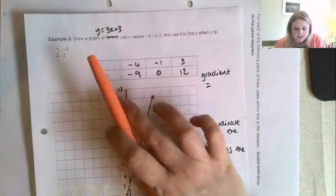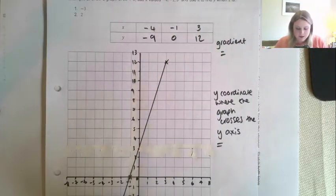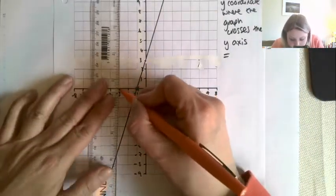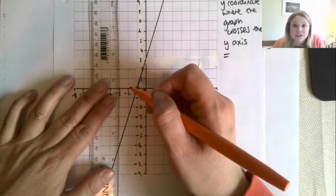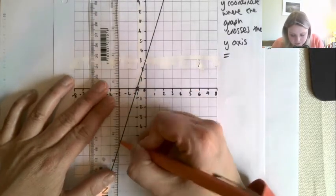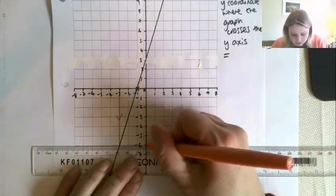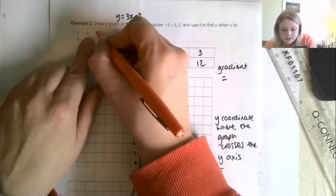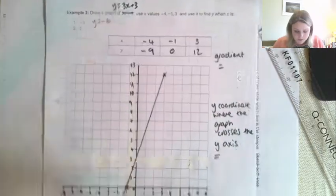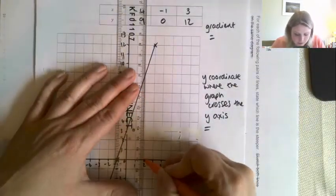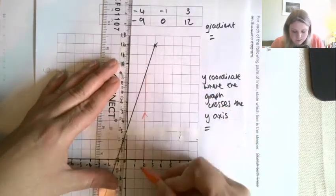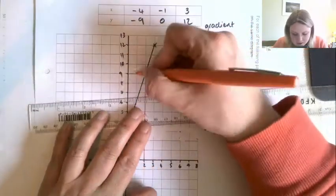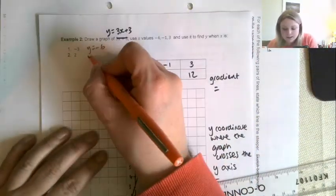Now the question that was originally on the page had asked you to also do this. I'm going to find y when x is minus 3. So to do that, we would go to minus 3 on our x-axis, go until it hits our graph, and then read across. So you should have got that whenever x is minus 3, y is minus 6. And then the next one was whenever x is 2, so if I go up and read across, then I got that y was 9.